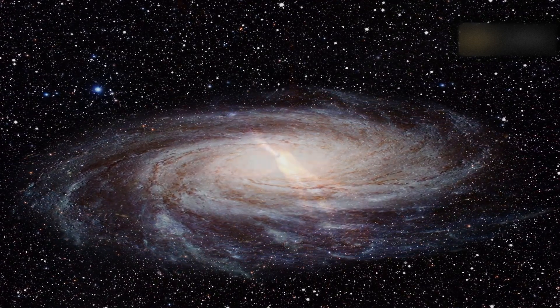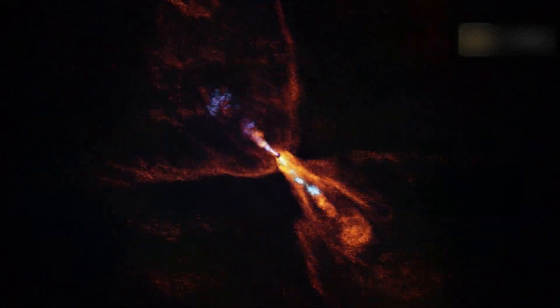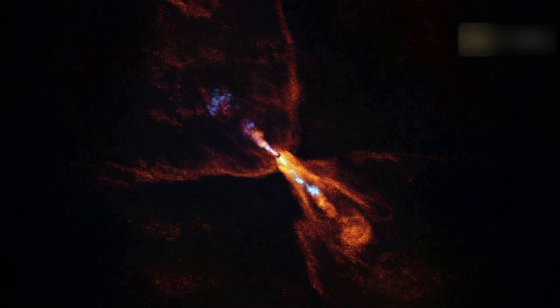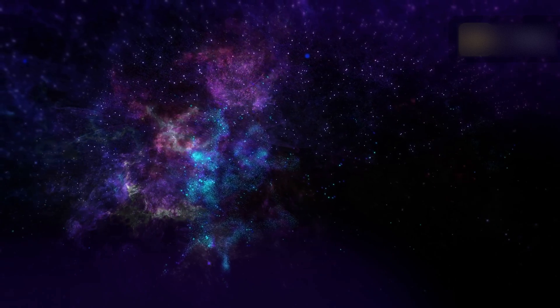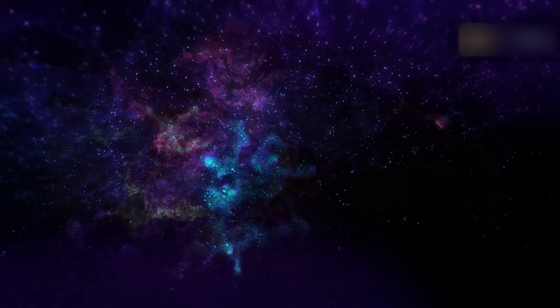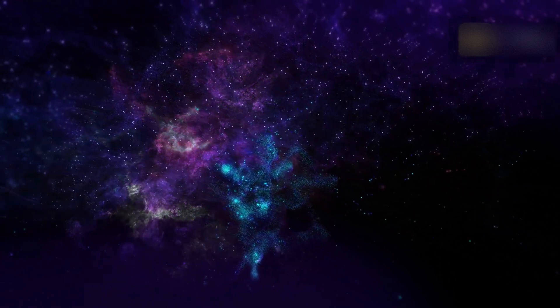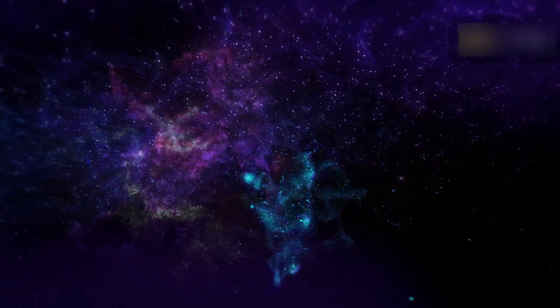Stars are born when cool and overdense patches of interstellar gas and dust collapse under their own gravity. This results in a protostar, surrounded by an envelope of the same material from which it formed. Now we've seen a system that looks like what our solar system looked like when it was just beginning to form.